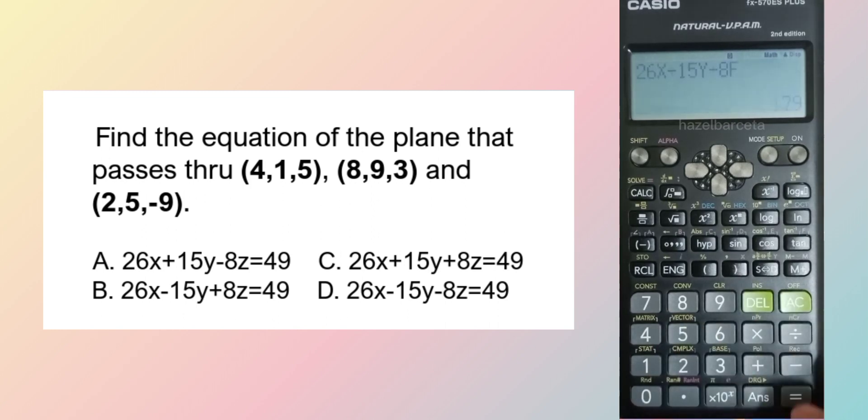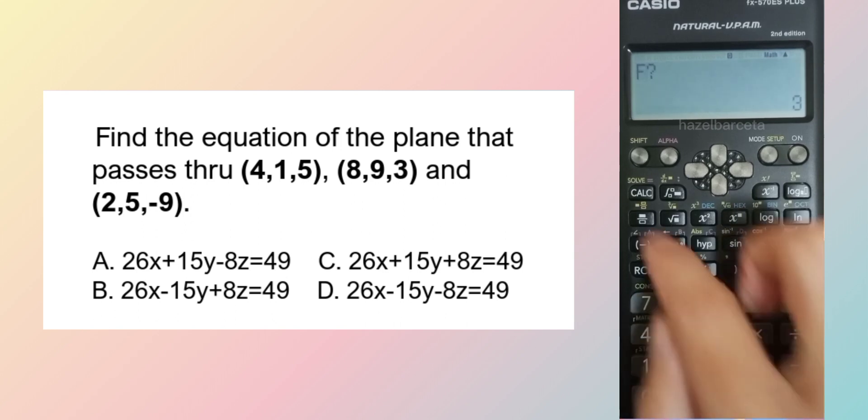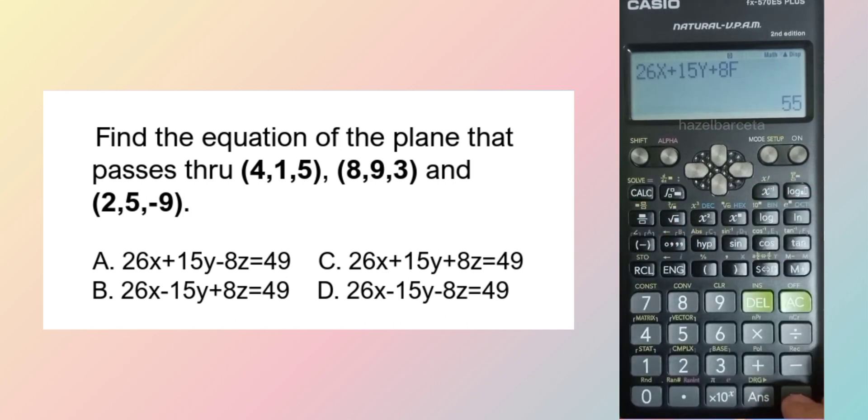The other points: 8, 9, and 3. Letter D. And the last one: 2, 5, negative 9. 49. So it's letter D.